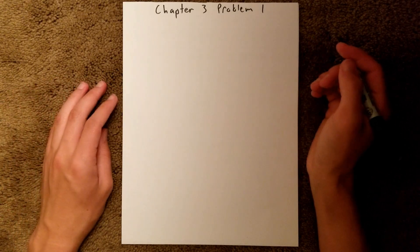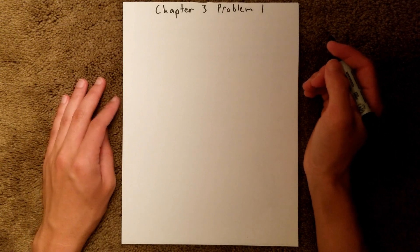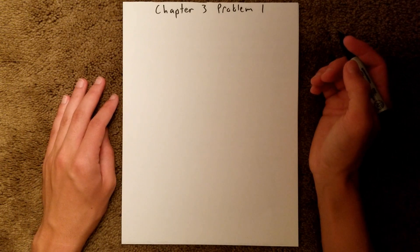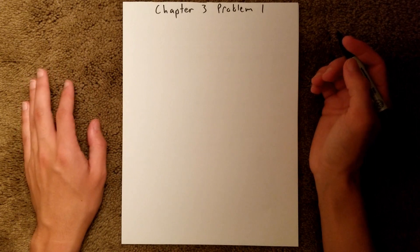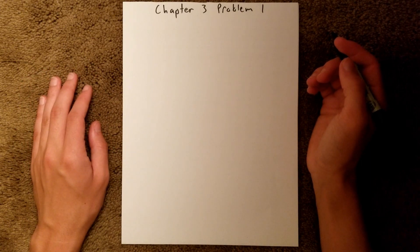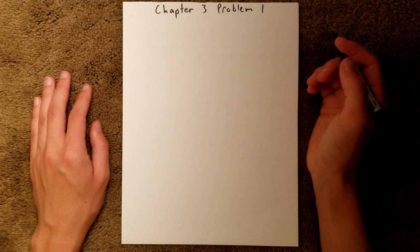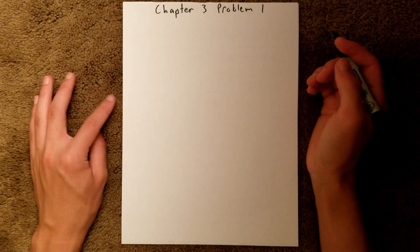Chapter 3 is all about experimental error, and in particular, Problem 1 is a significant figure question. We are given three different numbers, and we are asked to find how many of the digits are significant.